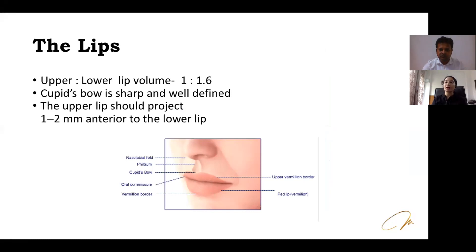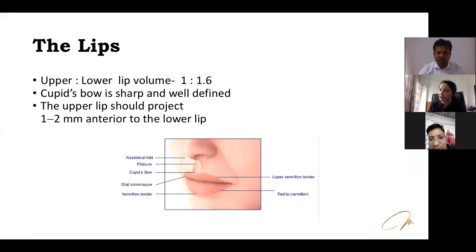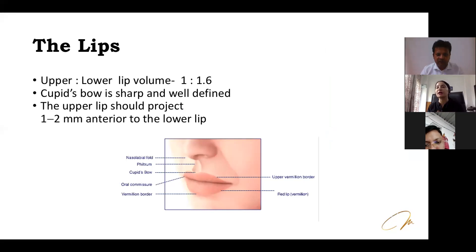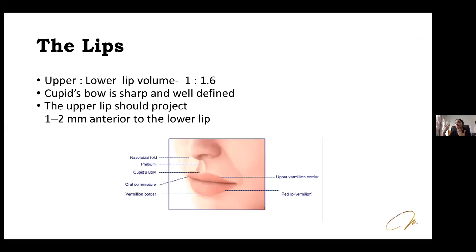For lips, the upper to lower lip volume ratio should be 1:1.6 (the golden proportion) — contrary to common belief, the lower lip should always have more volume. In side profile, the upper lip should project 1–2 mm anterior to the lower lip. If it doesn't, a few milliliters of filler at the piriform aperture will automatically bring the upper lip forward.